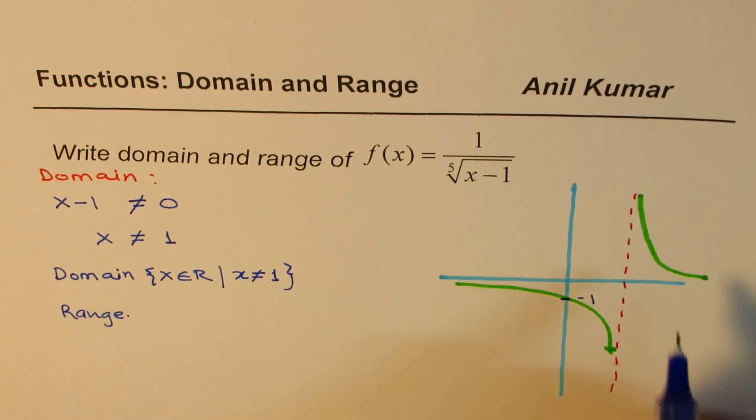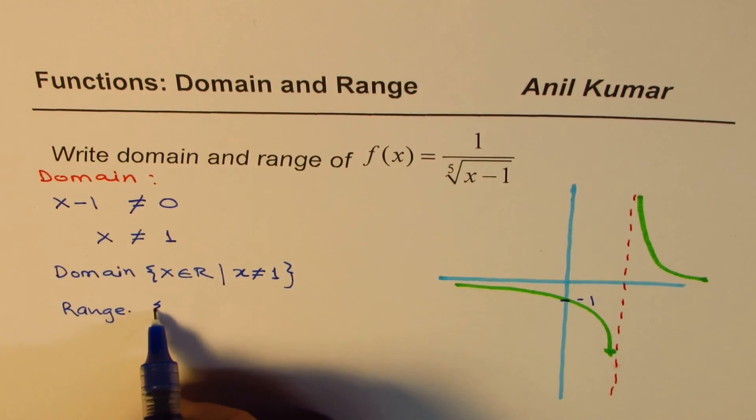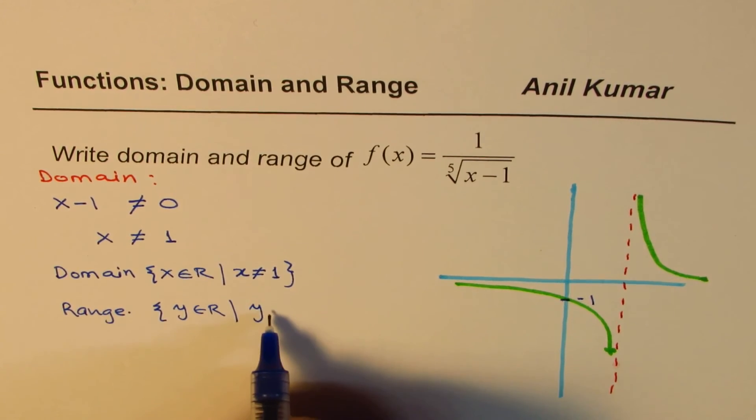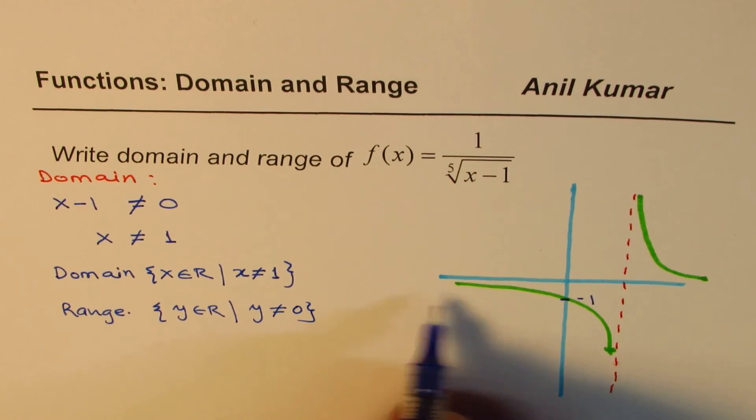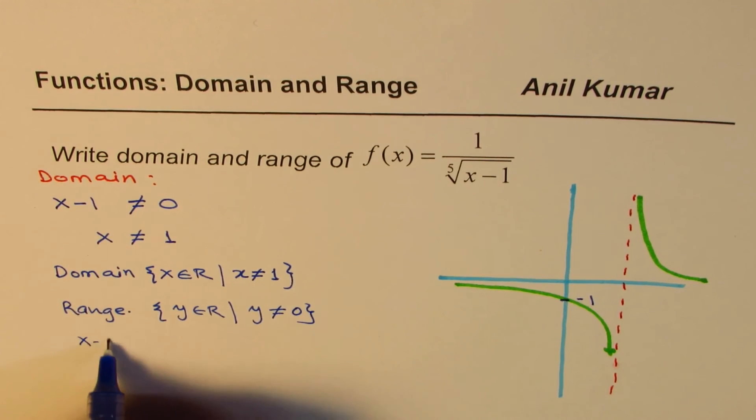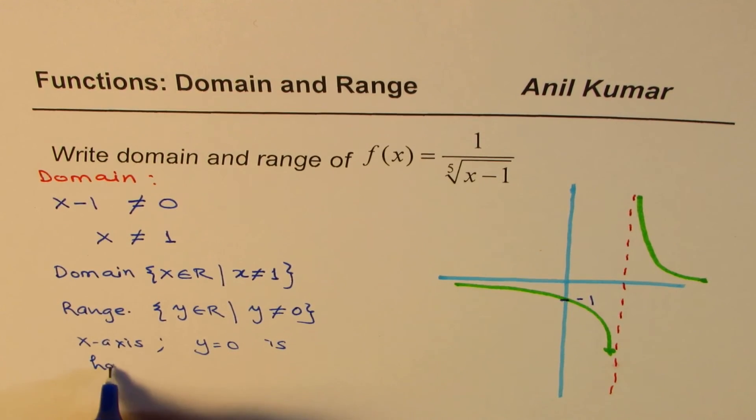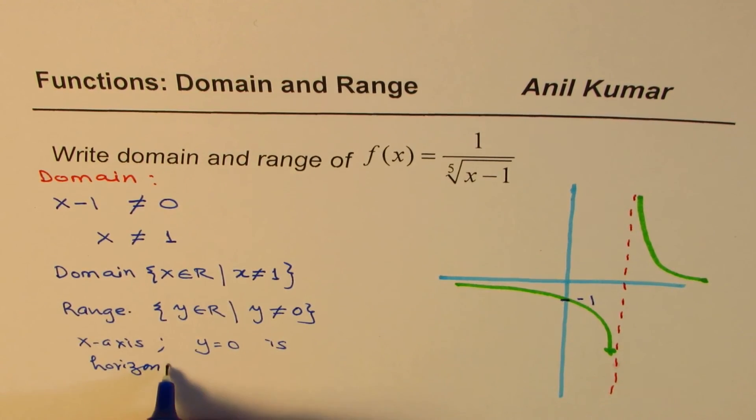So that is approximate graph of the given function. And as you can see in the range, we have y belongs to all values, where y is not equal to 0. In fact, the x-axis, which is y equals to 0, is horizontal asymptote for this function.